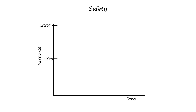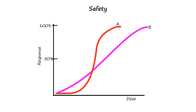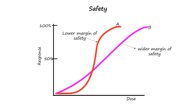Now we shall look into the safety of the drug. The easier way to determine drug safety is by looking at the slope of the dose-response curve. A drug with a steeper slope has a narrower margin of safety, as a small increase in dose can cause a much larger increase in response. In the curve given here, drug A has a lower margin of safety than drug B. In drug B, there is a wider range of doses that we can give without abruptly increasing the response.